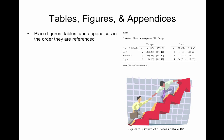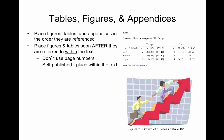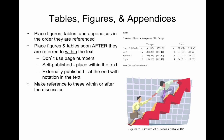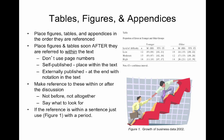Place figures and tables soon after they're referred to within the text. If it's self-published, place within the text. If it's externally published, at the end with a notation in the text — this allows the publisher to place them where it works for the journal. Make reference to these within or after the discussion, not before and not altogether. Say what to look for. If the reference is within a sentence, just use Figure 1 with a period. If the reference is a complete sentence, use a period, then parentheses — see Figure 1, period, parentheses.